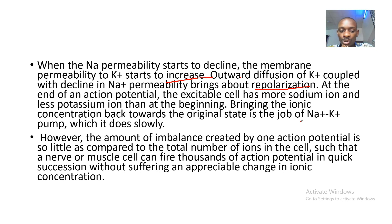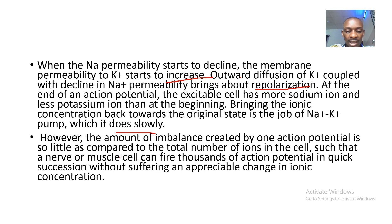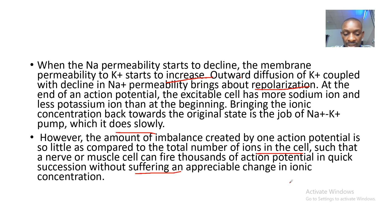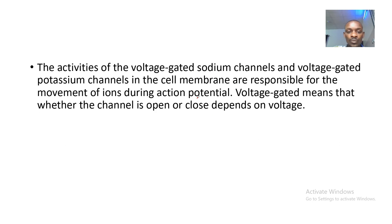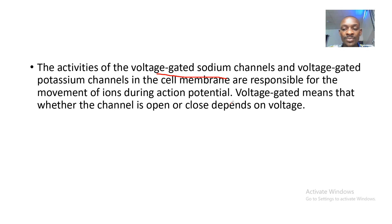Bringing the ionic concentration back to its original state is the job of the sodium-potassium pump, which does so slowly. However, the amount of imbalance created by one action potential is so small relative to the total number of ions in the cell that a nerve or muscle cell can fire thousands of action potentials in quick succession without suffering an appreciable change in ionic concentration.